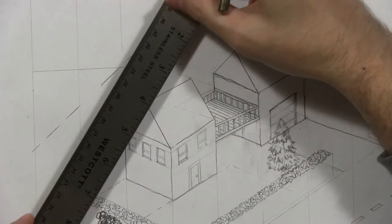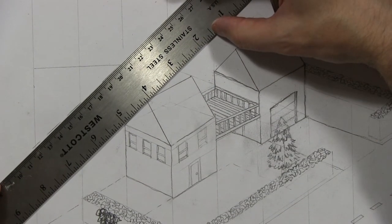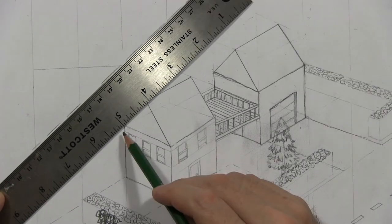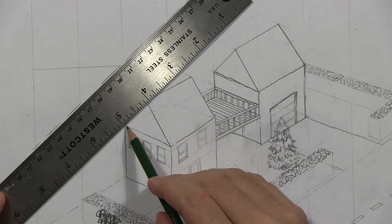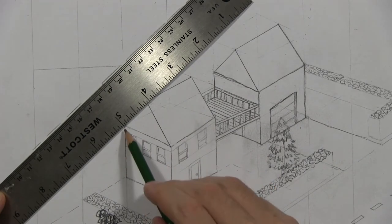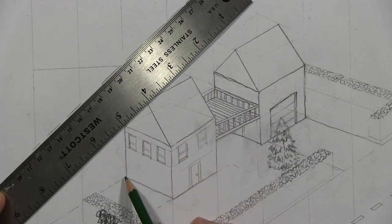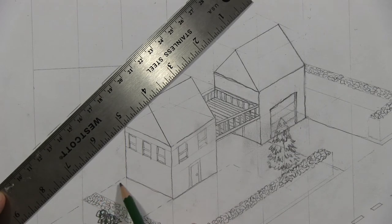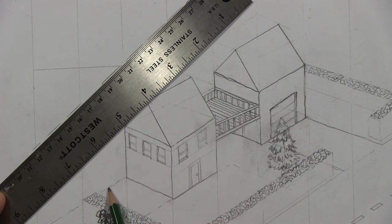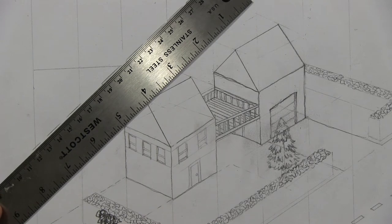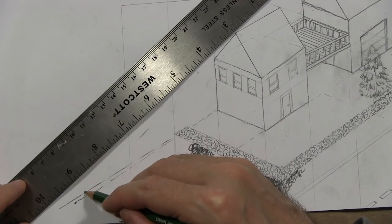So what can we do with that? We can line up any corner that we want to find. So I'm going to start with this corner of the house. If I come straight down, I have this line directly underneath this point that follows the plane of the ground. So where do they intersect? It intersects right here.